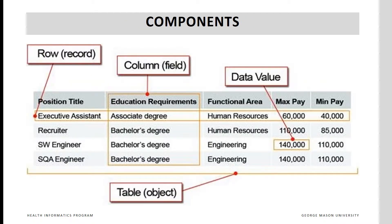A database consists of one or more tables. Each table has its own unique name and consists of columns and rows. A column is referred to as a field variable. The rows are records. In this example, one table in the database is shown. The columns — position title, educational requirements, functional area, max pay, and min pay — are fields. Each row consists of a record.